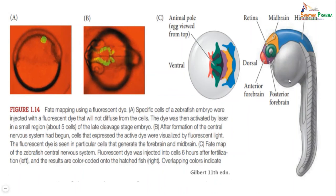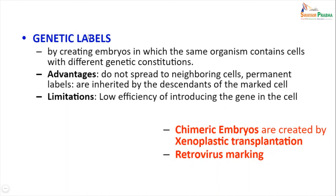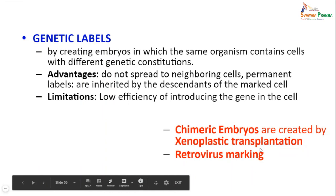Apart from all these kinds of labels, genetic labels are also used to study fate maps. Genetic labels work by creating embryos in which the same organism contains cells with different genetic constitutions. The advantages of genetic labels are that they do not spread to neighboring cells and are permanent — once added to the blastomeres, they are inherited by all descendants of the marked cell. Their limitation is low efficiency of introduction of the gene into the target cell.